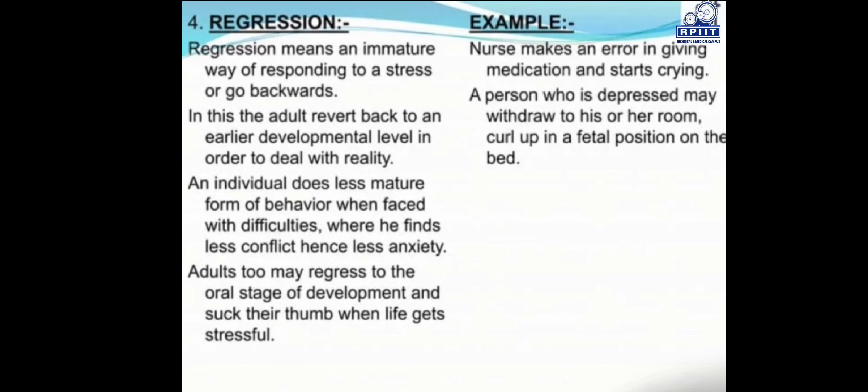The fourth type of defense mechanism is regression. Regression means an immature way of responding to stress, or going backwards — the adult reverts to an earlier developmental level in order to deal with reality. The individual does a less mature form of behavior when faced with difficulties, where there is less conflict and hence less anxiety.